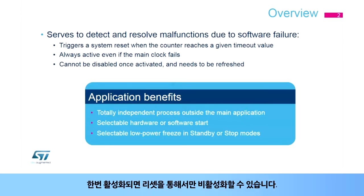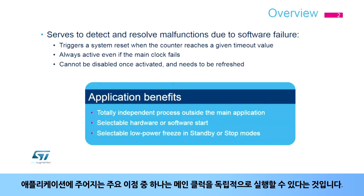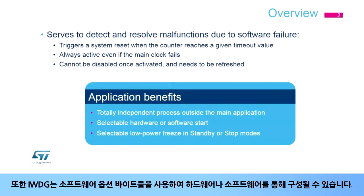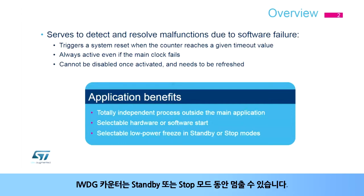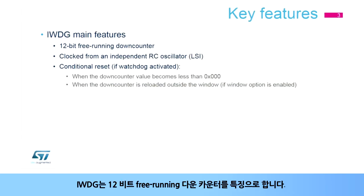Once enabled, it can only be disabled by a reset. One of the main benefits for applications is its ability to run independently from the main clock. Also, the IWDG can be configured through hardware or software using option bytes, and the IWDG counter can be frozen during standby or stop mode. The IWDG features a 12-bit free-running down-counter.